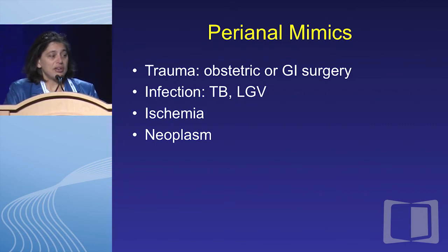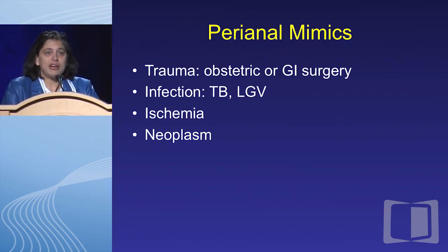Perianal mimics: not everything that fistulizes is Crohn's disease. Don't forget to ask women about obstetric history — if they had five children and tore with each delivery without proper repair, they may have scarred down and have perianal problems. Previous GI surgery — a hemorrhoidectomy may have gone bad. Infection: the worst perianal disease I ever saw was in a Filipino nurse transferred for Crohn's treatment; he actually had a pelvis full of TB causing his fistulas. Don't forget LGV and other non-bacterial infections that can cause fistulas. Ischemia from previous surgery, and neoplasm.